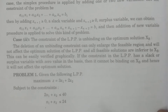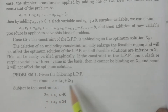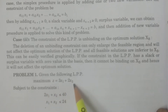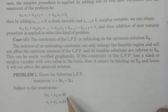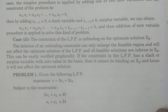You see the problem: given the following LPP, maximize z = 3x1 + 2x2, subject to the constraints 2x1 + x2 ≤ 40 and x1 + x2 ≤ 24.